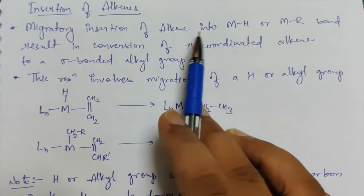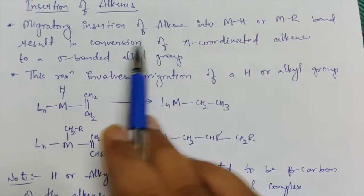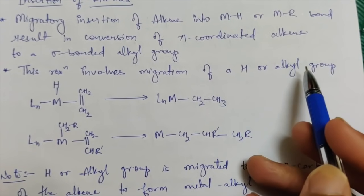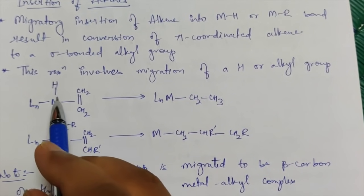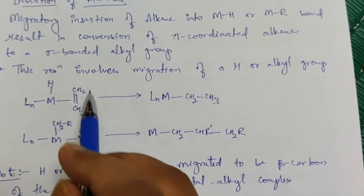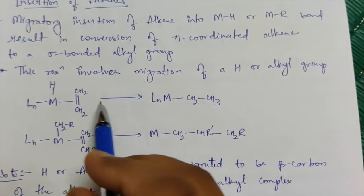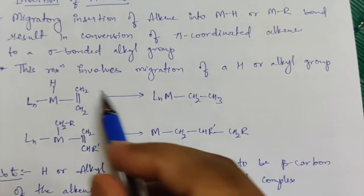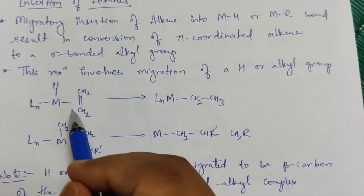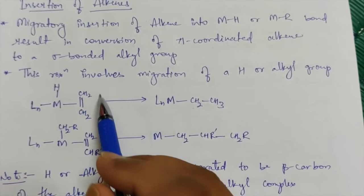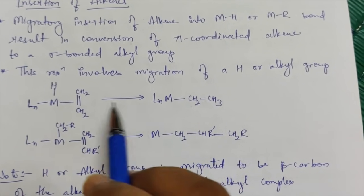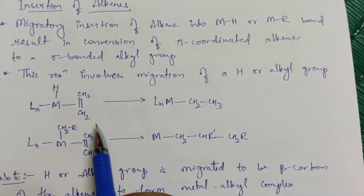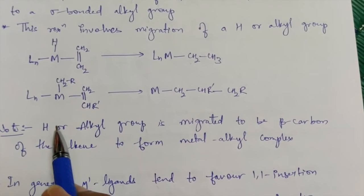Migratory insertion of alkene into a metal-hydrogen bond or metal-alkyl bond results in conversion of a pi-coordinated alkene to a sigma-bonded alkyl group. This reaction involves migration of a hydrogen or alkyl group. The metal is directly bonded to hydrogen as well as pi-coordinatively bonded to an ethylene molecule. This pi-coordinated ligand gets converted into a sigma-coordinated ligand — this is possible only if the metal is directly coordinated to a hydrogen or an alkyl part and is also coordinated with the pi bond of an alkene.